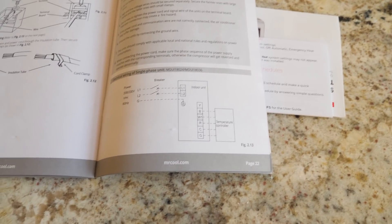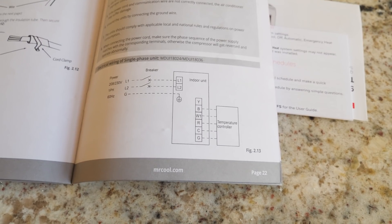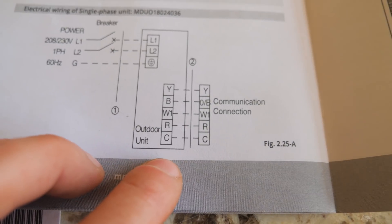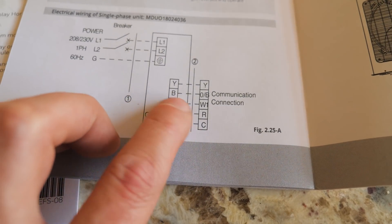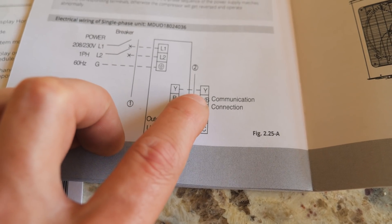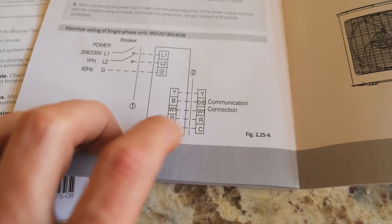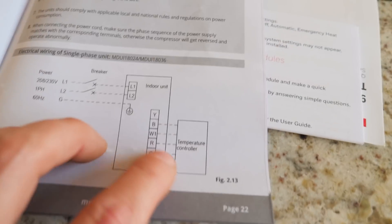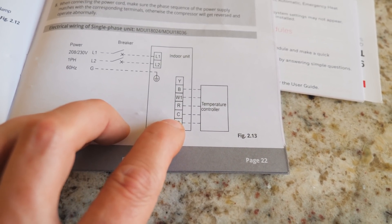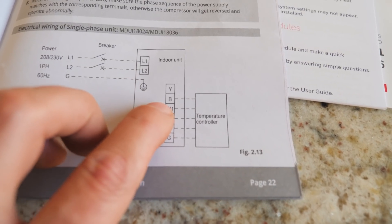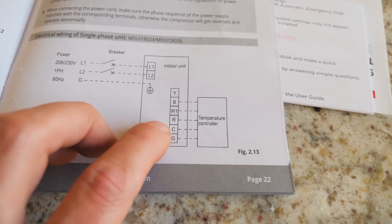So I had a problem and it was my fault but it was actually their fault because their directions are not very clear for someone who's never done this. On the terminals for the communication wire your outdoor unit runs to your indoor unit and here you have a Y which is the compressor contactor and mine has that, it has the yellow wire going to the yellow wire on the air handler.